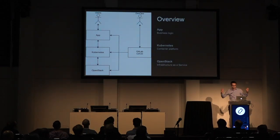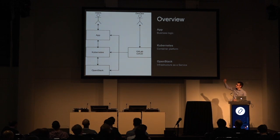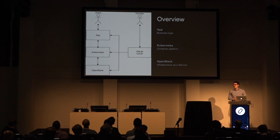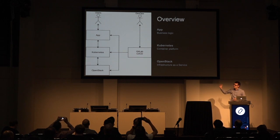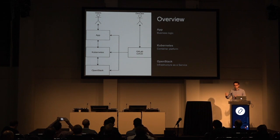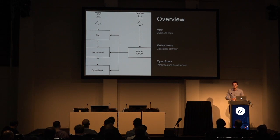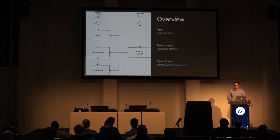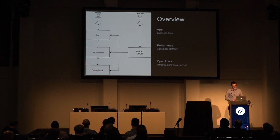The overview of the architecture is that your users talk to your app, your app consumes Kubernetes, and Kubernetes consumes OpenStack — that's your data plane where user requests flow. On the right-hand side you have what I call the control plane, where your DevOps team works. They talk to your CI and then the CI makes things happen in the data plane — updating the application, doing things in Kubernetes and OpenStack. The CI is not involved in every single user request. So: app is business logic, Kubernetes is the container platform, and OpenStack is the infrastructure as a service.